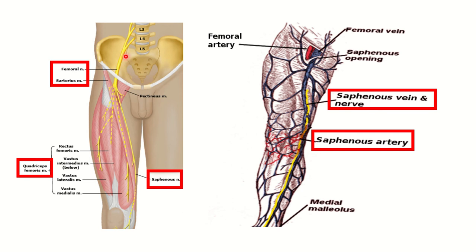In this diagram, we can see the femoral nerve arising from L2, L3, and L4. The sartorius muscle is clearly supplied by the femoral nerve, which passes below the inguinal canal. The femoral nerve also supplies the quadriceps group of muscles: rectus femoris, vastus intermedius (which lies just below the rectus femoris), vastus lateralis, and vastus medialis. One branch of the femoral nerve is the saphenous nerve, visible here in the diagram.